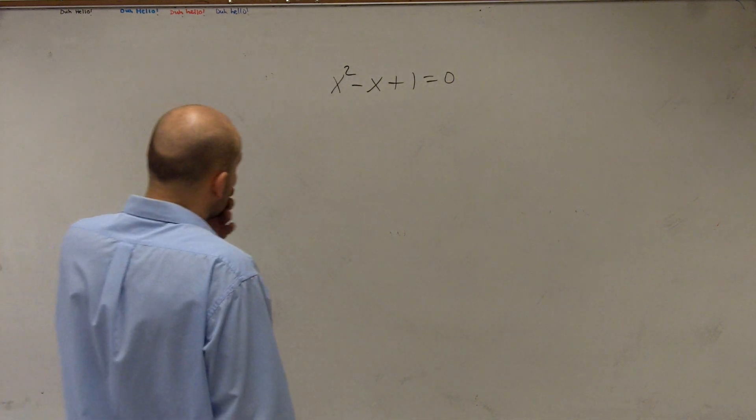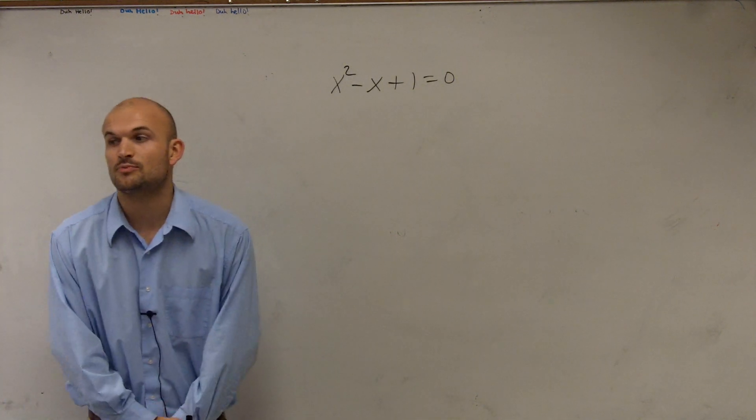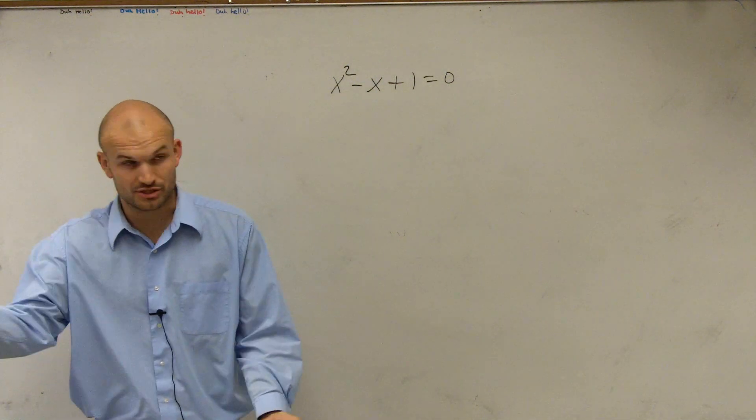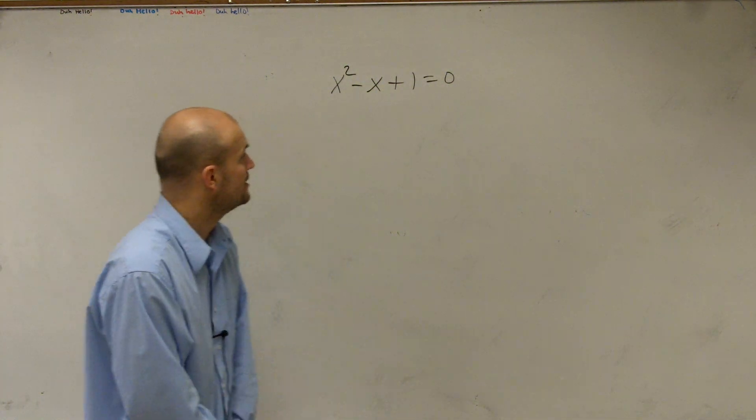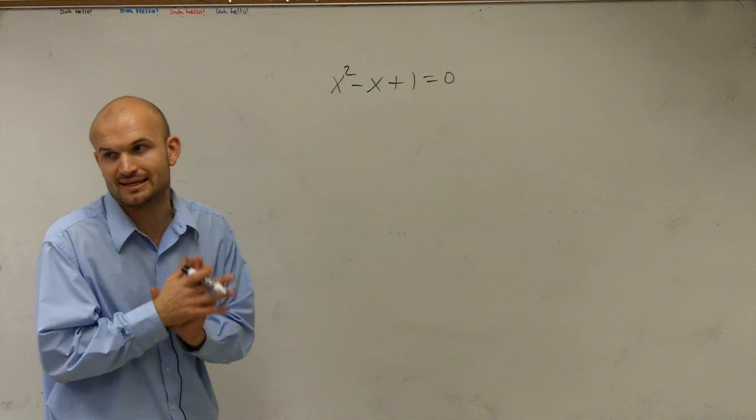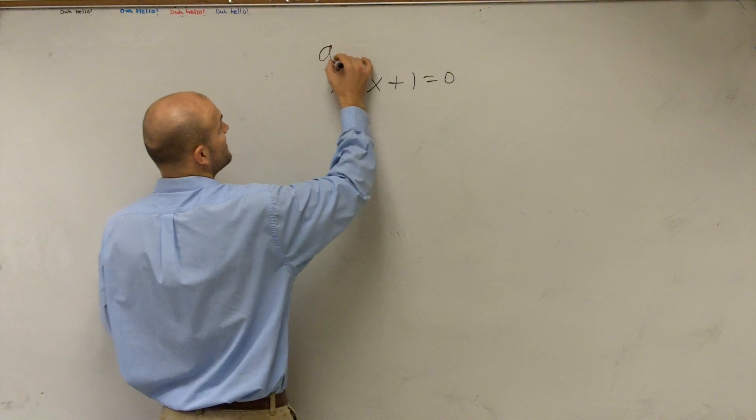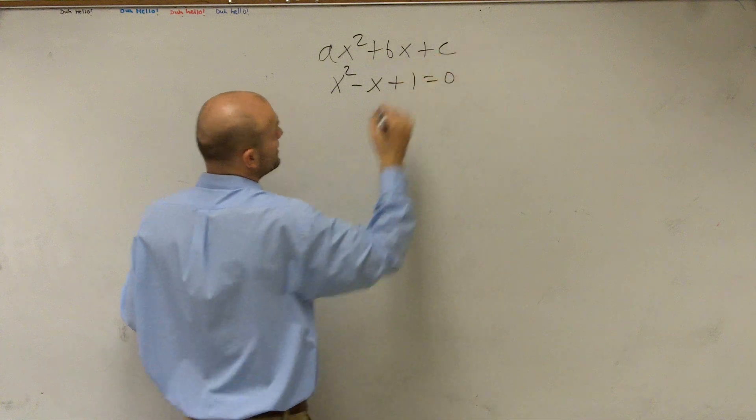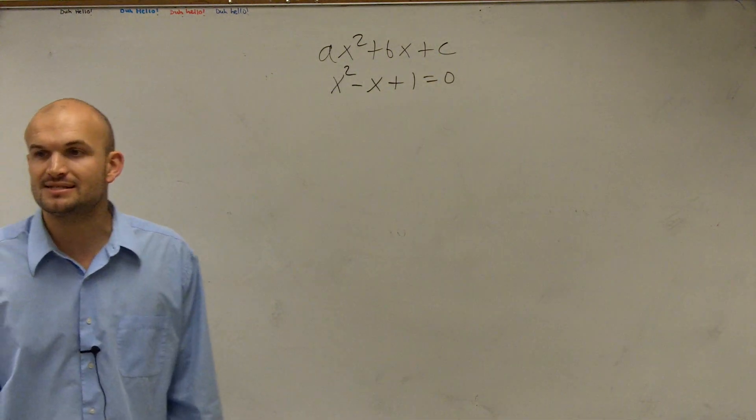So when looking at x squared minus x plus 1, if I want to solve this by quadratic formula, just like you guys have your own problem to look at, when you're going to be solving this by quadratic formula, absolutely the first amazing thing that we have to do is ax squared plus bx plus c. Label your a, b, and c.